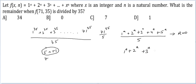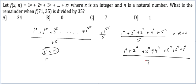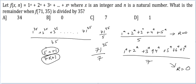Similarly with 7: 1ᵃ + 2ᵃ + 3ᵃ + 4ᵃ + 5ᵃ + 6ᵃ + 7ᵃ divided by 7 always gives remainder 0. I have 71 consecutive numbers, so 10 groups of 7. Removing those, I'm only left with 71³⁵ divided by 7, which gives remainder 1. So remainder with 7 is also 1. Since remainder with 5 is 1 and remainder with 7 is 1, remainder with 35 is also 1. The answer is option B.